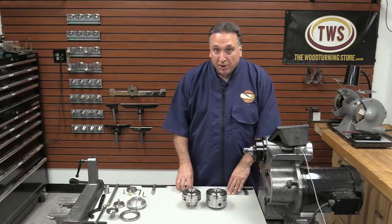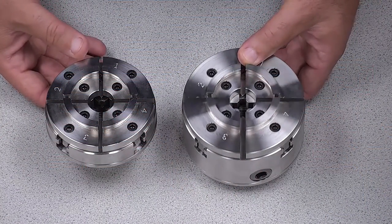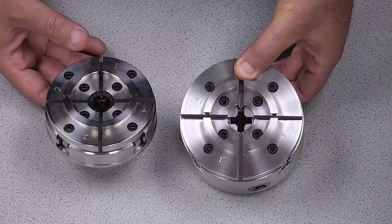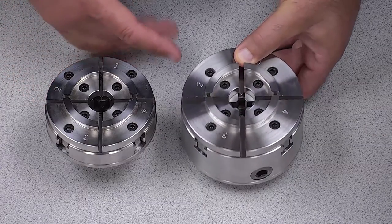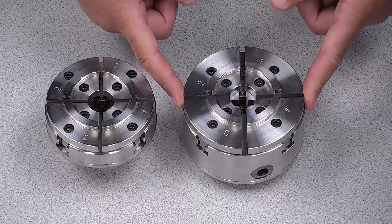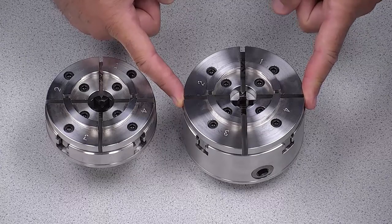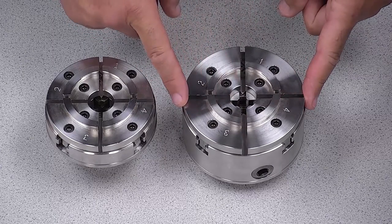So let's get a look at the chucks. On my right you have the SK114. The SK114 is as the name says, 114 millimeters in diameter, which is about four and a half inches.